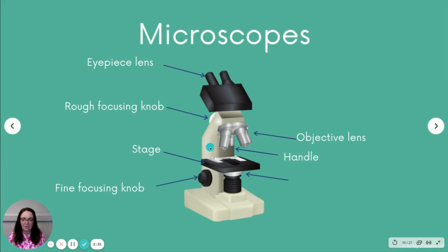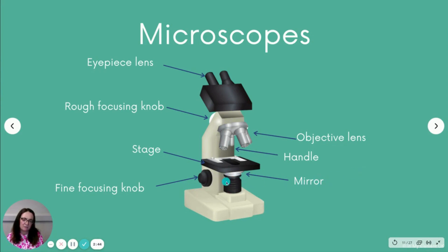This here is the handle — when carrying a microscope you will have one hand on the handle and one hand on the base. And because we're looking at a light microscope, this will have the mirror, which would be angled slightly differently usually, so that the light source can hit the mirror and reflect up through the stage.